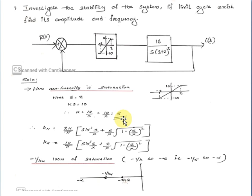Next, consider KN. We know the equation of KN for saturation nonlinearity: KN equals (2K/π) into [sin inverse(S/X) plus (S/X) into root of (1 minus (S/X)²)]. KN is equal to 5.